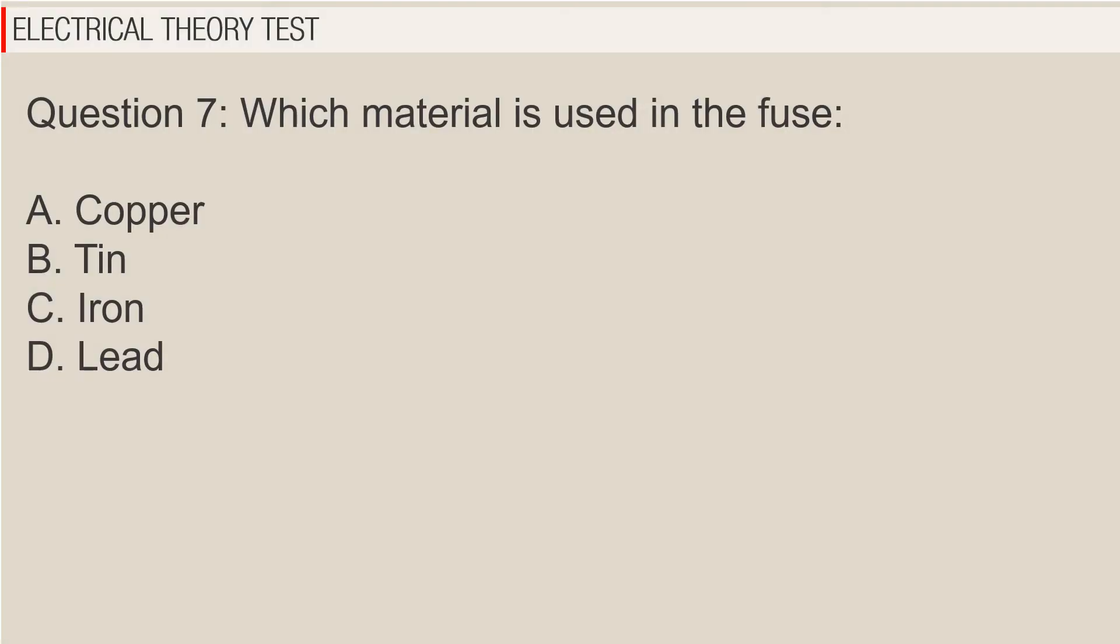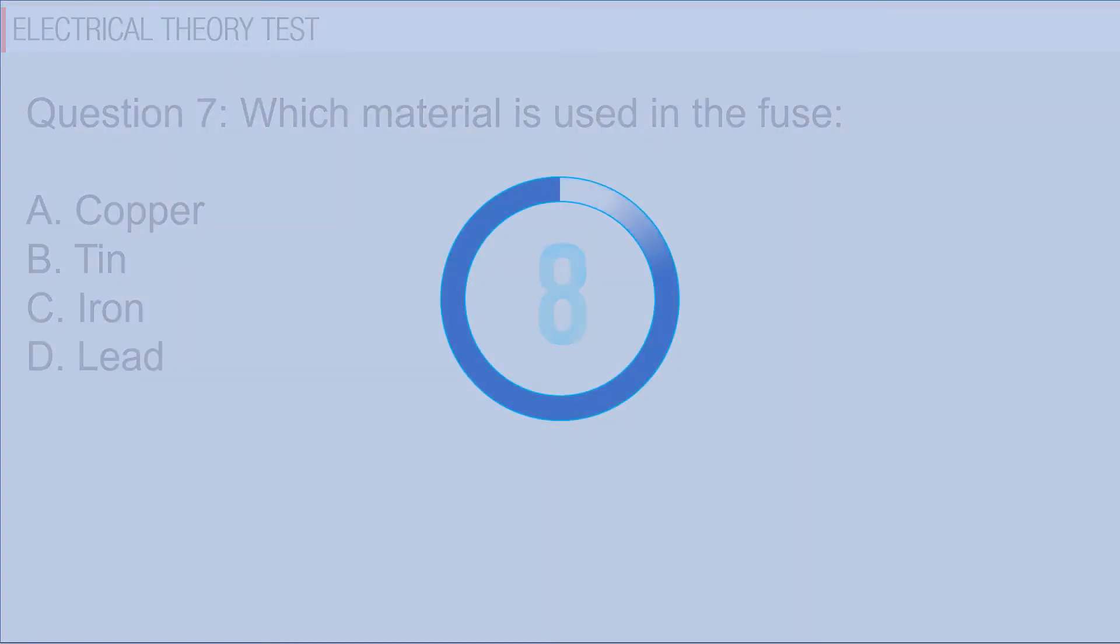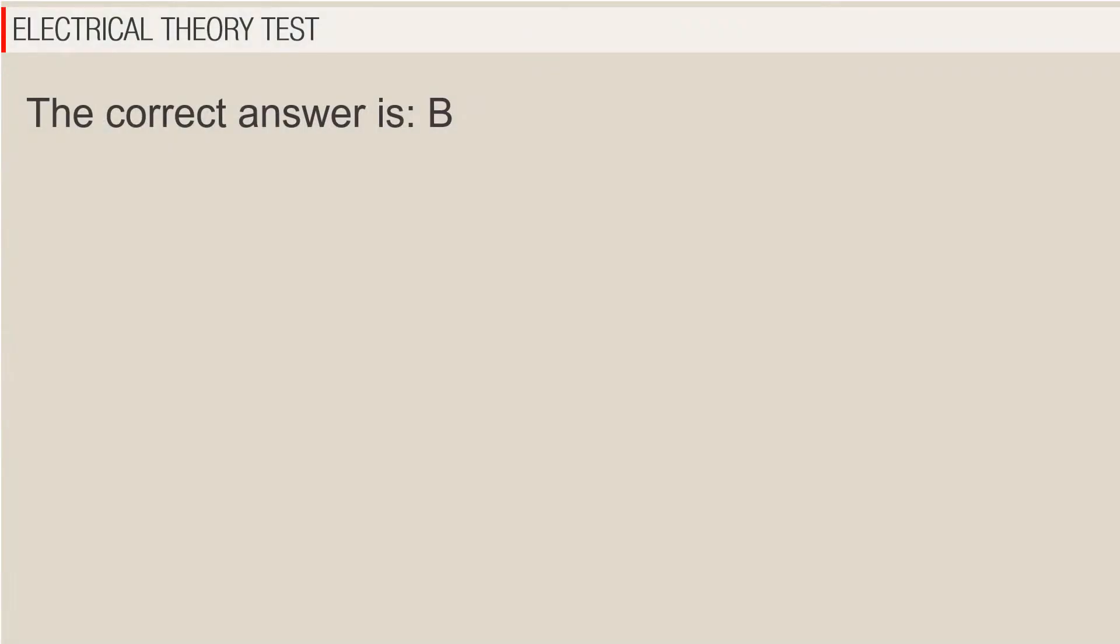Question 7: Which material is used in the fuse? A. Copper, B. Tin, C. Iron, D. Lead. The correct answer is B.